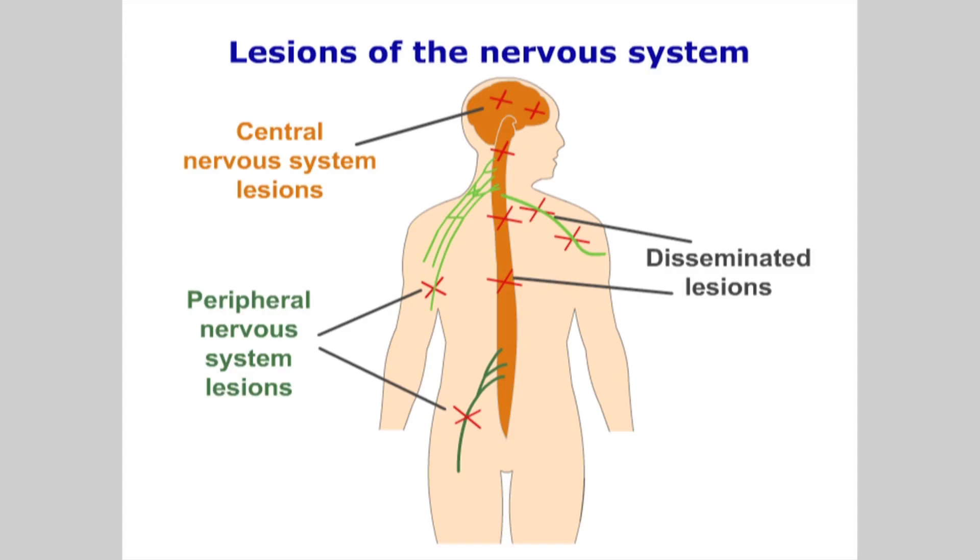The nervous system is comprised of the central and peripheral nervous systems. This classification may be of more value when studying anatomical, physiological and pathological elements. But in a clinical setting, it may not be clear whether a lesion or dysfunction is related to central or peripheral nervous systems, or of a disseminated nature. This may be established when sufficient information is obtained or on examination.